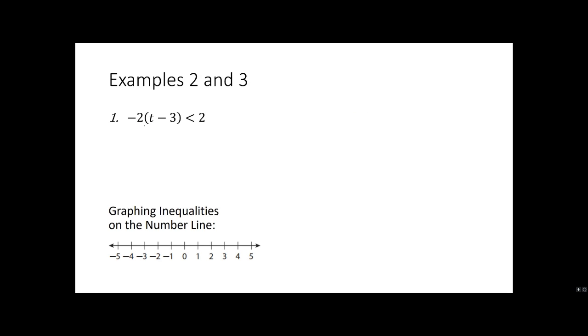Alright, so examples two and three. So I'm going to do some examples of inequalities while showing you the distributive property. So first things first, we always take care of the distributive property. So I'm going to have negative two t because negative two times t, and then negative two times negative three which is positive six, and that is less than two. So again, write your reasoning, this was the distributive property. Make sure you put your reasoning to the right, great habit.